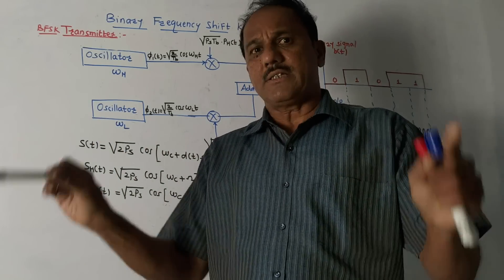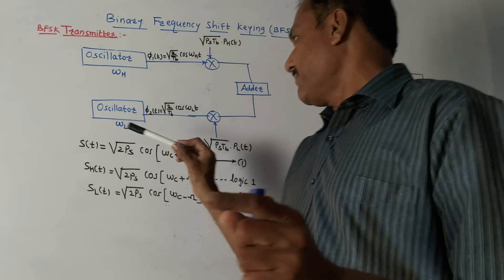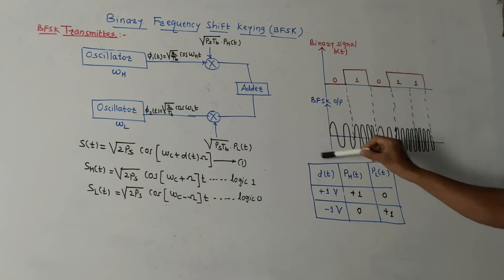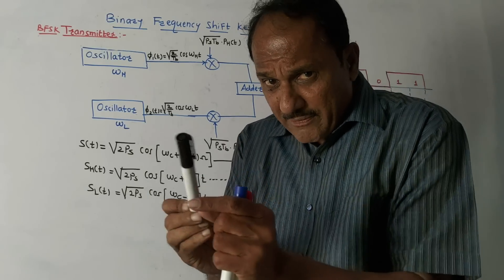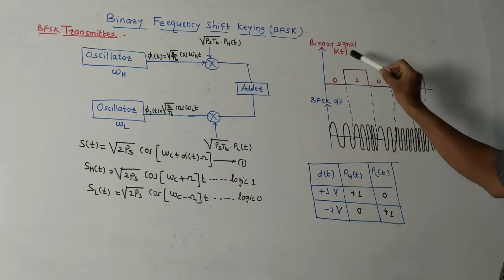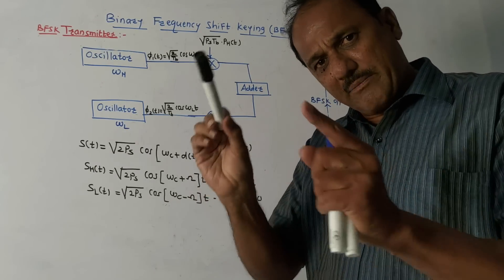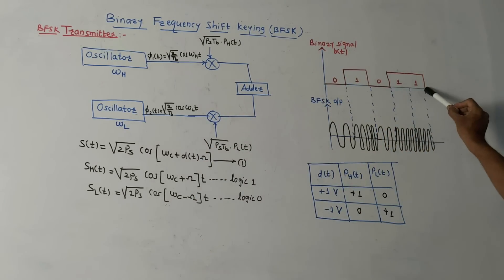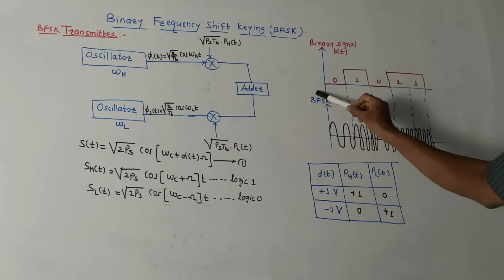We can expect a question like: draw the BFSK transmitter and write the mathematical analysis or explain the BFSK transmitter system. First, let us talk about the diagram. According to the binary sequence, the frequency of the signal will be changed. The first graph is for the binary signal. We know that incoming bits can be zero or one. Assume the bit stream is zero, one, zero, one, one. The second diagram is the BFSK output diagram.